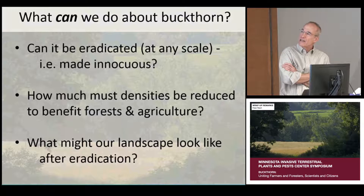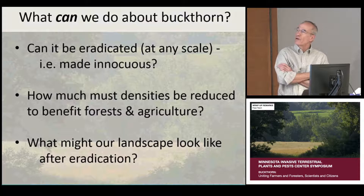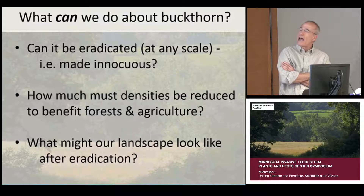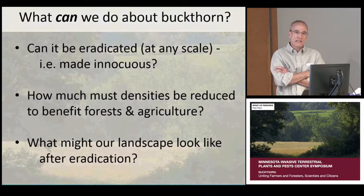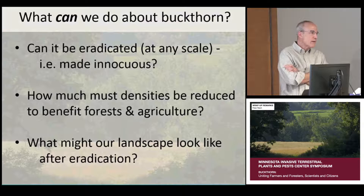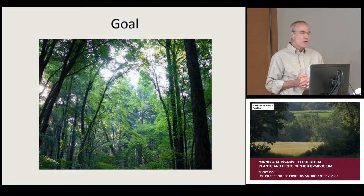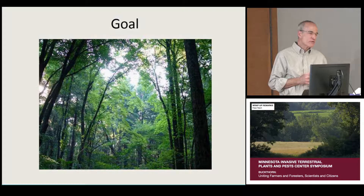How much must densities be reduced to benefit forests and agriculture — meaning forest biodiversity and future timber production? I don't think we actually know that yet, surprisingly, after all these years. And lastly, what might our landscape look like if we were somehow magically able to eradicate buckthorn anywhere?